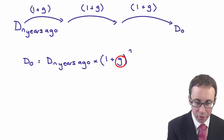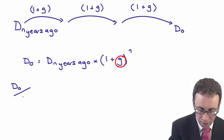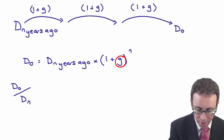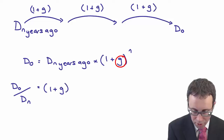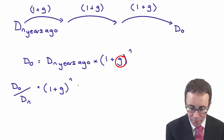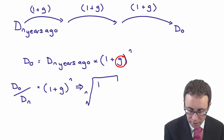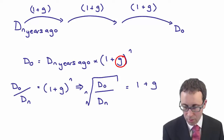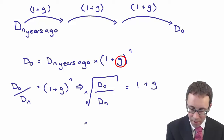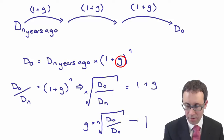What we're trying to work out in that formula is G, the growth rate. If you do D0 divided by Dn, that's going to be equal to one plus G to the power of N. If you rearrange it and take the Nth root of both sides, you get: G is equal to the Nth root of D0 divided by Dn, minus one.